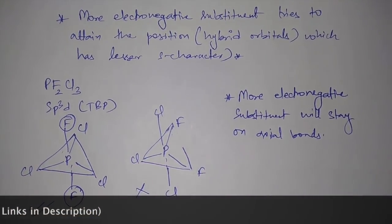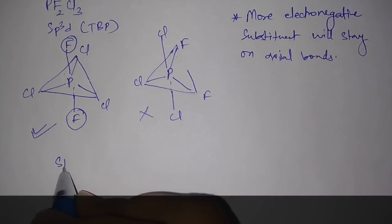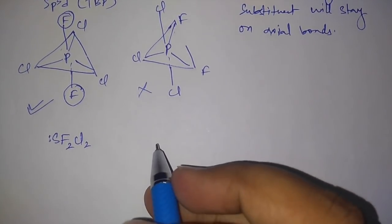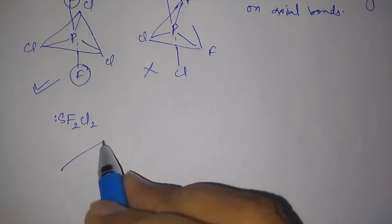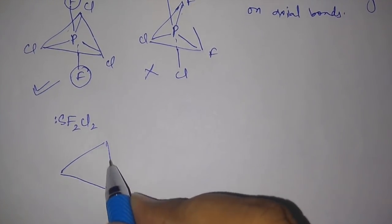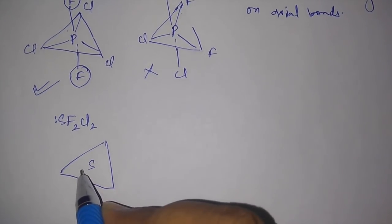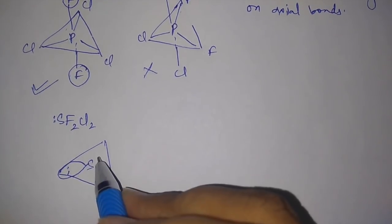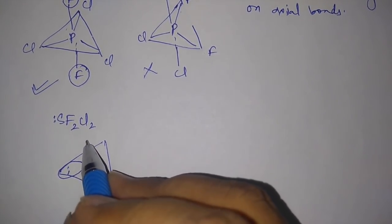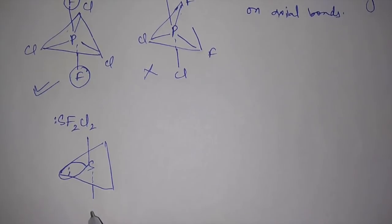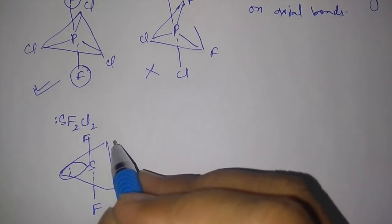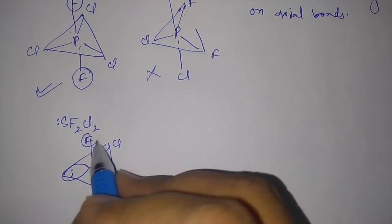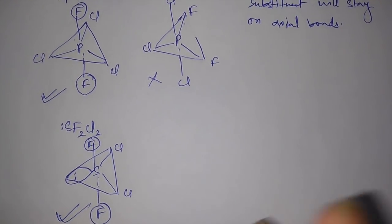Another example: SF2Cl2. Here sulfur also has a lone pair. Combining both concepts we've learned — the lone pair should be on the equatorial position, and the more electronegative substituent fluorine should go to the axial bonds. So the stable shape has the lone pair at equatorial, both fluorines at axial positions, and both chlorines at the equatorial positions.